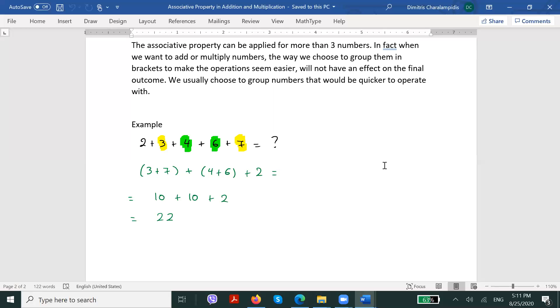And the reason I used these specific groups was that 3 and 7 equals 10, while 4 and 6 equals 10 respectively. And finally, the total result in this case would be equal to 22.